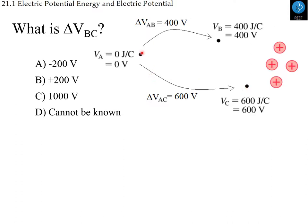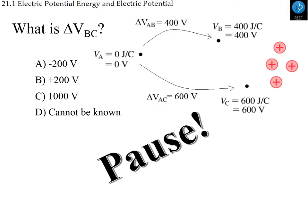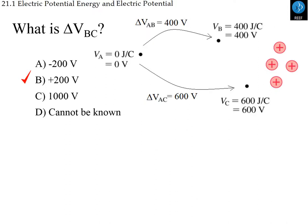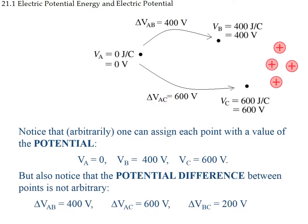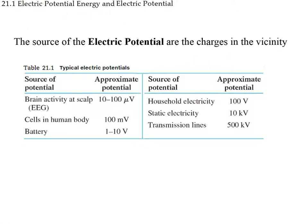The voltage at B is 400 volts and at C is 600 volts. The question is: what is the difference in electric potential between points B and C? Pause and think. It is 200 volts — the final potential minus the initial potential: 600 minus 400 equals 200 volts.